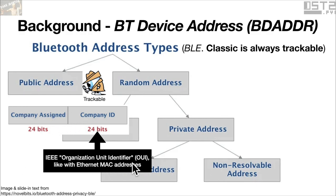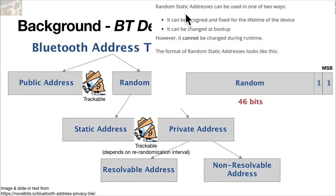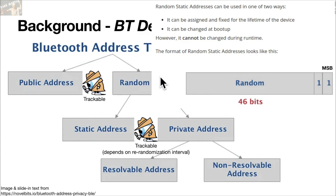Next there is the static address, which is trackable and depends on the re-randomization interval — but in practice I haven't seen any re-randomization. The static address can be assigned and fixed for the lifetime of the device, or it can be changed at boot-up but cannot change during runtime. The format is that the most significant bit is 1 and the second most significant bit is 1, and the rest is random. In hex, if you see the most significant nibble start with F, E, D, or C, that means it's a static address — that's the only way to distinguish these types, based on the two most significant bits.